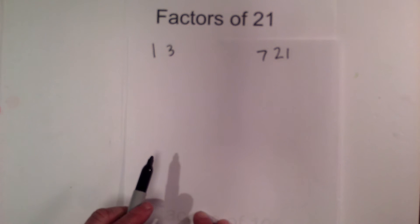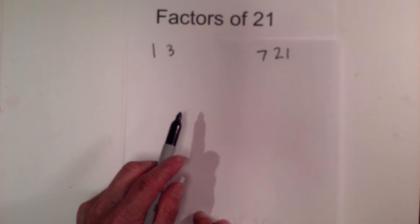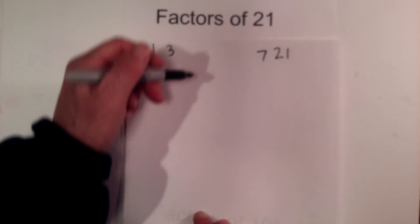So right now there's no numbers between 3 and 7 that go into 21, so I know that I have found all the factors.